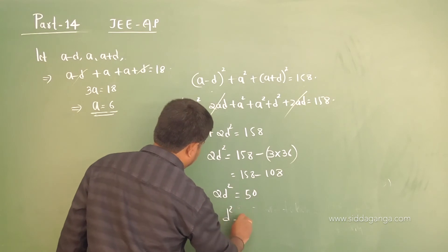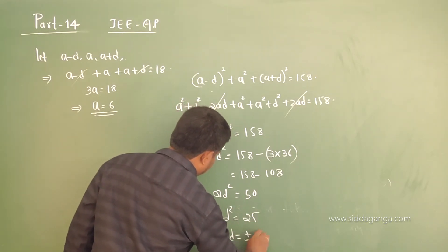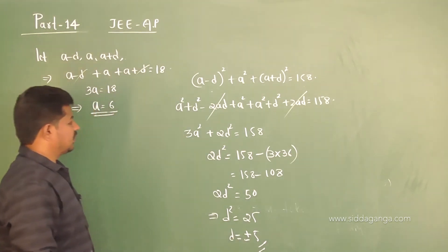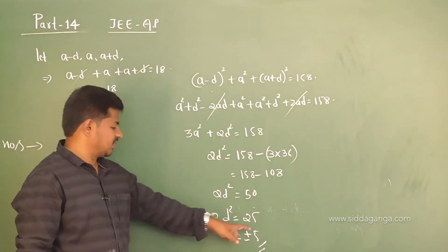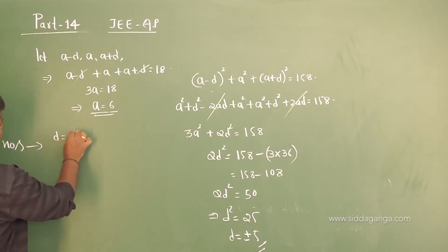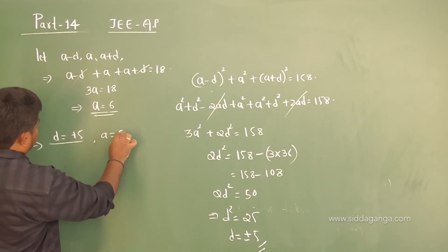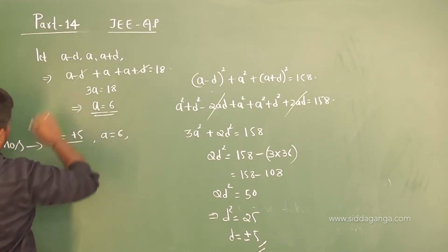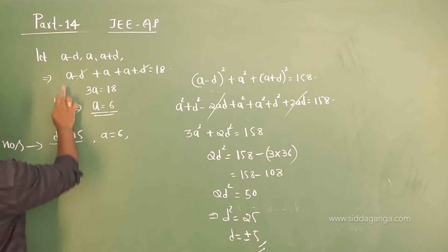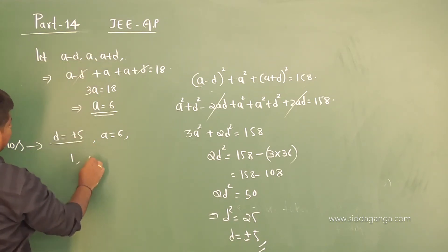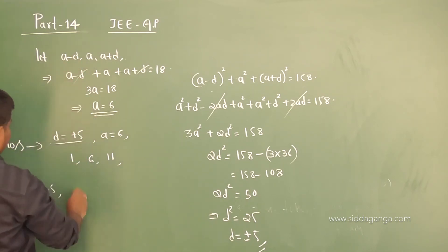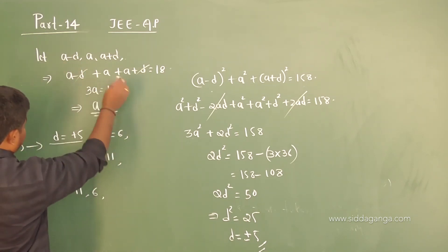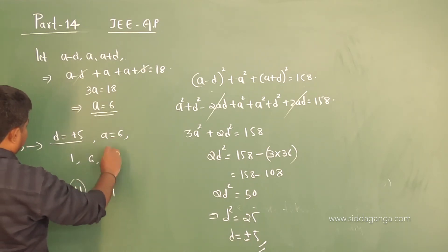Since a equals 6, 3 times 36 equals 108. So 2d² equals 158 minus 108 equals 50, giving d² equals 25, so d equals plus or minus 5. When d equals plus 5: numbers are 1, 6, 11. When d equals minus 5: numbers are 11, 6, 1. In both cases, the greatest number is 11.